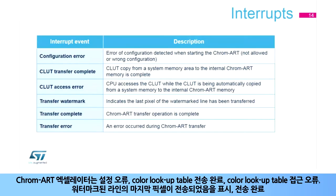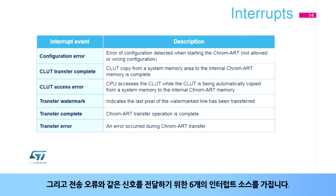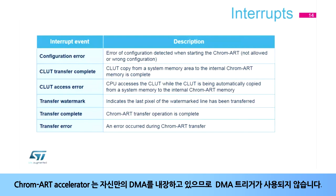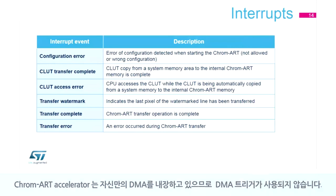The Chroma Art Accelerator has six interrupt sources to signal configuration errors, CLUT transfer complete, CLUT access error, watermark reached during a transfer, transfer complete, and transfer error. No DMA trigger is used, as the Chroma Art Accelerator embeds its own DMA.